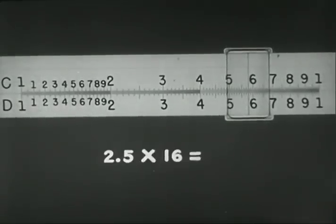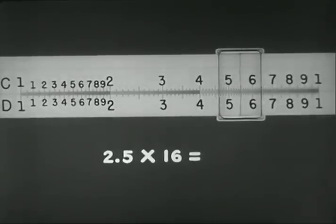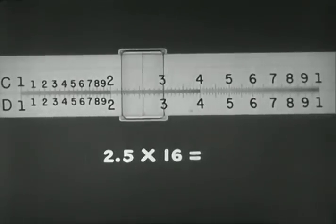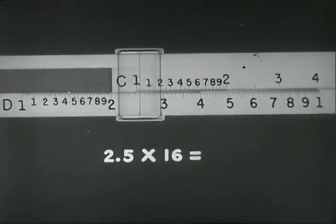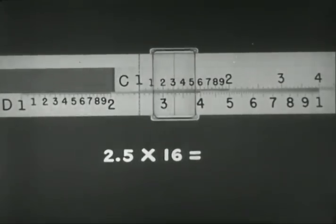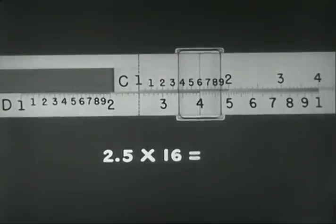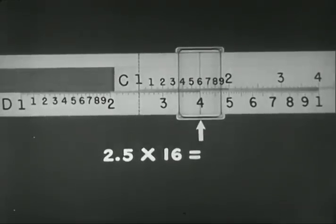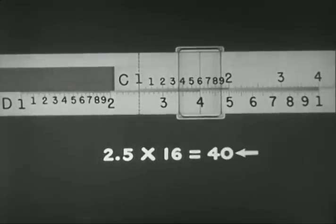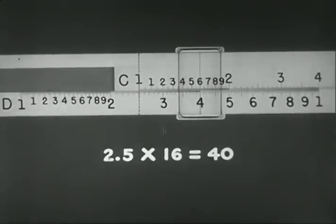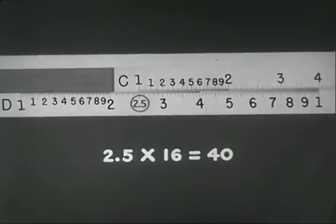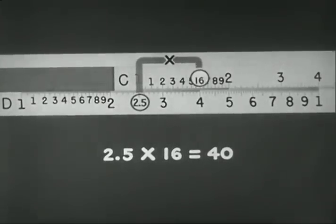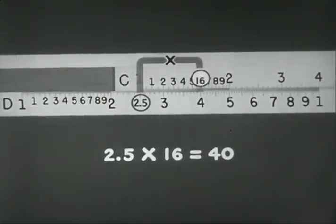To multiply 2.5 by 16, for example, first find 2.5 on D, and to it slide the index of C. Move the hairline to 16 on C, and read the answer 40 under the hairline on D. The ciphers and decimals required by the problem are, of course, placed mentally. 2.5 times 16 equals 40.